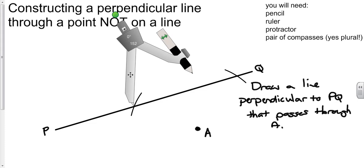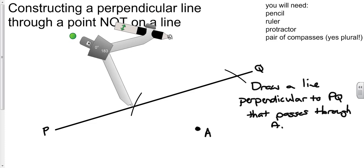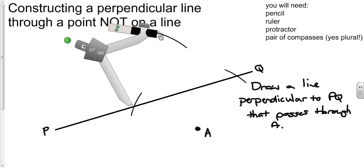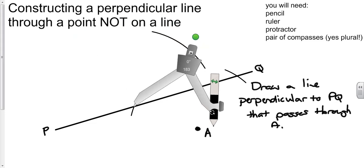And then we repeat the process that we would do for a perpendicular bisector. Extend this out so it's definitely over halfway. And I'm going to put in my first arc there. And there's going to be one on the other side as well.